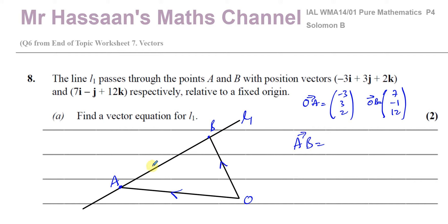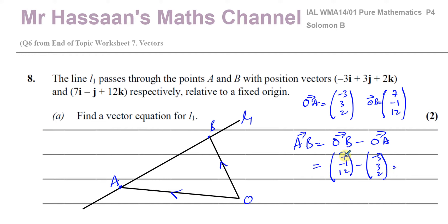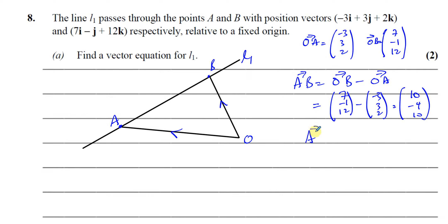If I want to go from A to B, I have to go from A to O and then from O to B — so it's minus OA plus OB, or OB minus OA. That will be these two subtracted: 7, minus 1, 12, take away minus 3, 3, 2. That gives 7 minus minus 3, which is 10; minus 1 minus 3 which is minus 4; and 12 minus 2 which is also 10. So the vector A to B is 10, minus 4, 10.